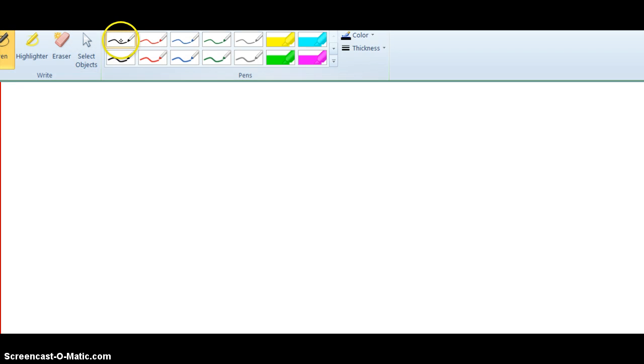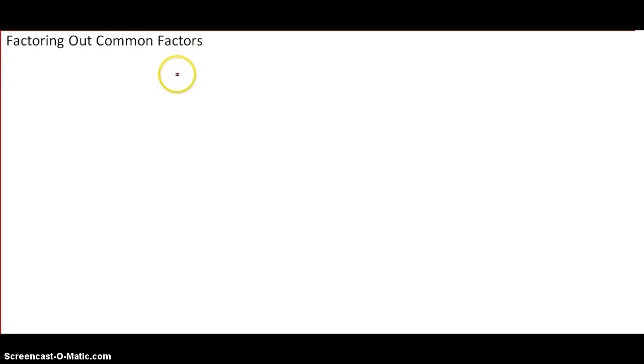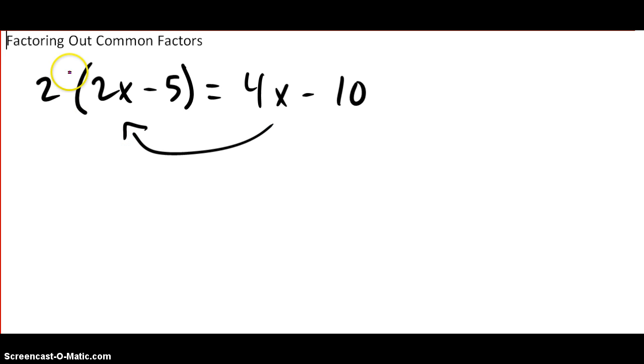So we're going to be talking about factoring out common factors. We already learned about multiplying polynomials. And something we didn't practice much was distributing across polynomials. So real quickly, if I had something that looked like this, 2 times 2x minus 5, remember that we take what's on the outside and we multiply it across everything in the parentheses. So in this case, that would be 4x minus 10. And of course, that means that if we factor 4x minus 10, we get this. Two factors, 2 and 2x minus 5, right?